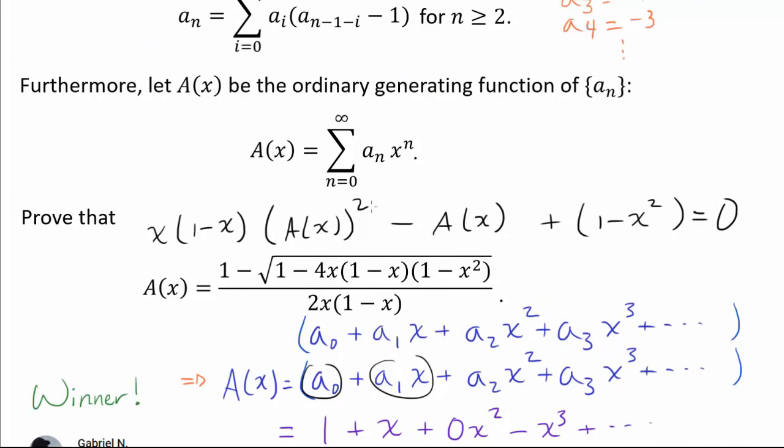Now if we go all the way back up to our quadratic formula, we quickly see that when we apply -b plus or minus square root of b² minus 4ac over 2a, we get our desired equation.